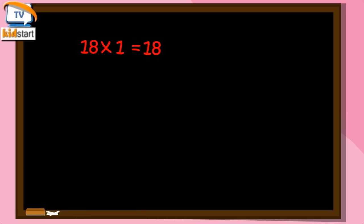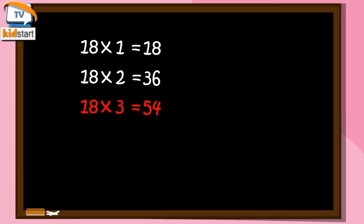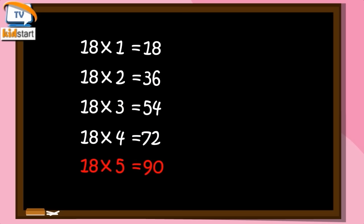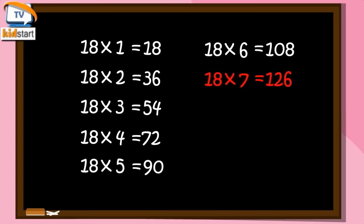18 ones are 18. 18 twos are 36. 18 threes are 54. 18 fours are 72. 18 fives are 90. 18 sixes are 108. 18 sevens are 126. 18 eights are 144.